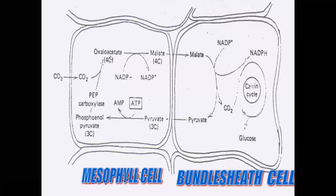The oxaloacetic acid then utilizes one NADPH+H⁺ to form four carbon atoms of malic acid (malate) in the presence of dehydrogenase enzyme. This malate is formed in the mesophyll cells, and then the four carbon atoms of malic acid enter into the bundle sheath cells through the plasmodesmata, where it participates in decarboxylation.